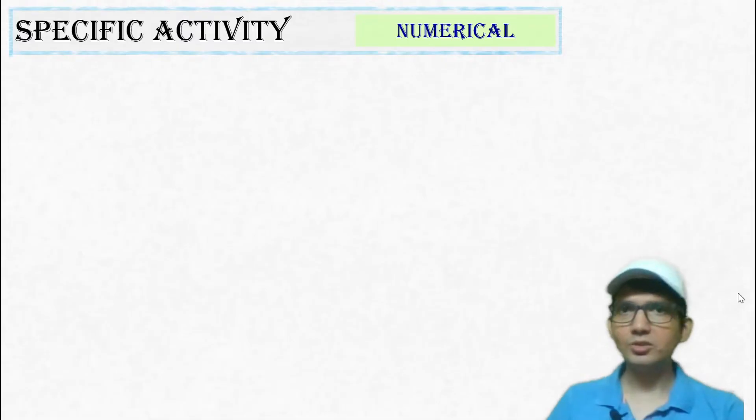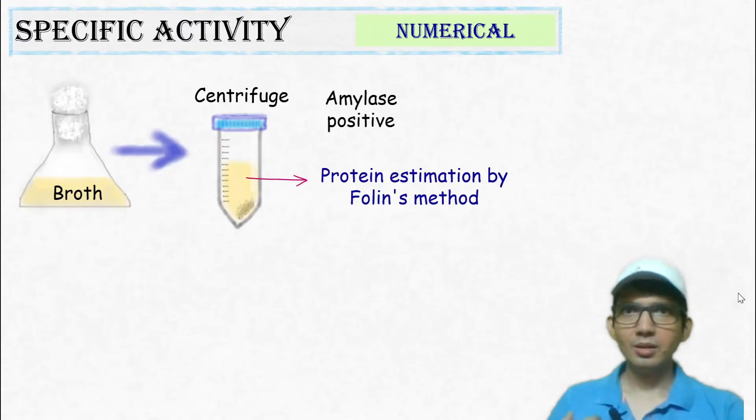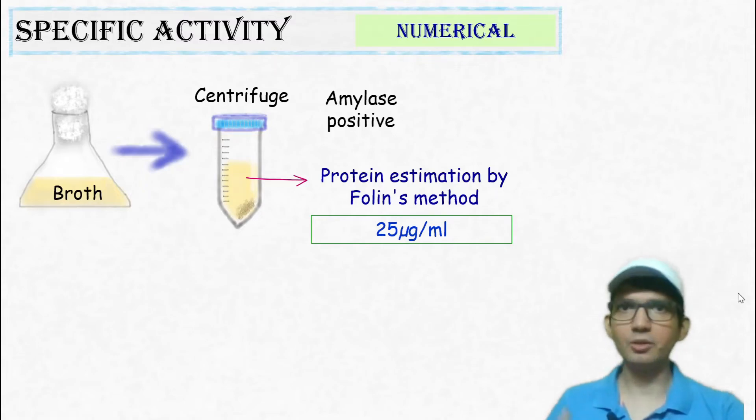Let's understand the concept of specific activity with a simple numerical. Let's say you have collected the cultured supernatant which is positive for amylase. Performing protein estimation by Folin's method will tell us how much protein is present in the supernatant. Let us say this is 25 micrograms per ml.